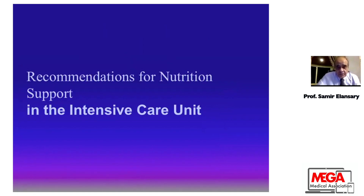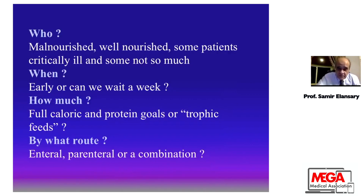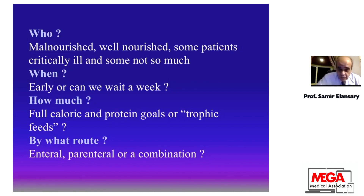Regarding recommendations for nutrition support in the ICU, we must ask ourselves several questions during patient evaluation: Is this patient malnourished or well-nourished? Does the patient need urgent feeding support? When do we start feeding — early, or can we wait one week, especially in well-nourished patients? How much — full caloric and protein goals, or trophic feeds? And by what route: enteral, parenteral, or a combination?